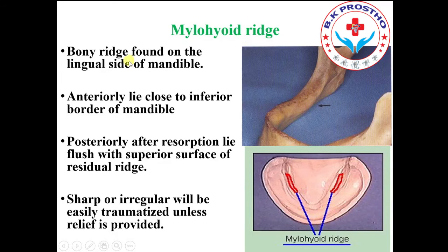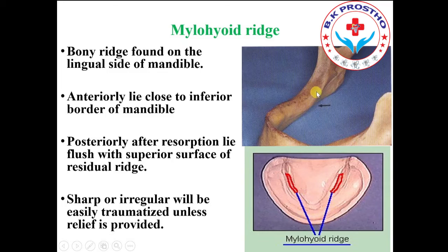The mylohyoid ridge is a bony ridge found on the lingual side of the mandible. Anteriorly, it lies close to the inferior part of the mandible, while posteriorly it lies flush with the superior surface of the residual ridge. If the mylohyoid ridge is found to be sharp or irregular, it will be easily traumatized and relief from the denture is required.